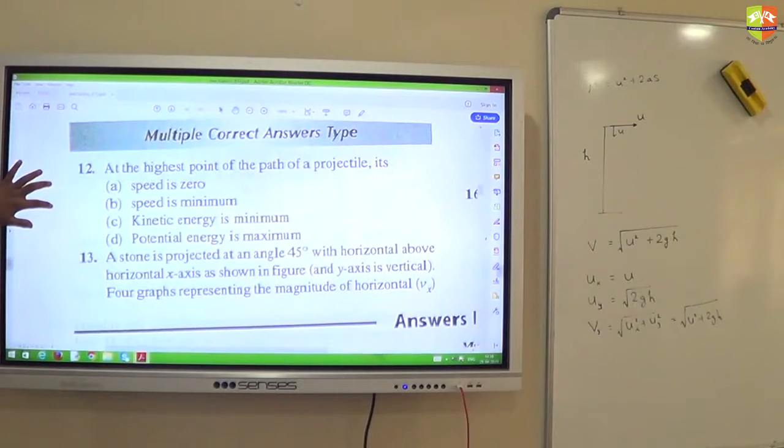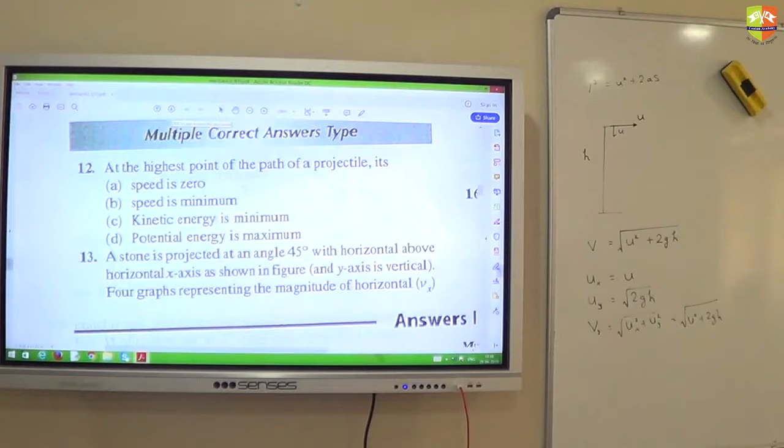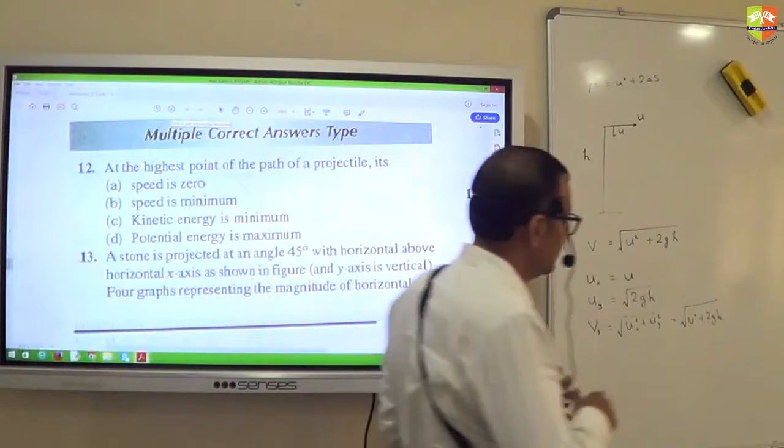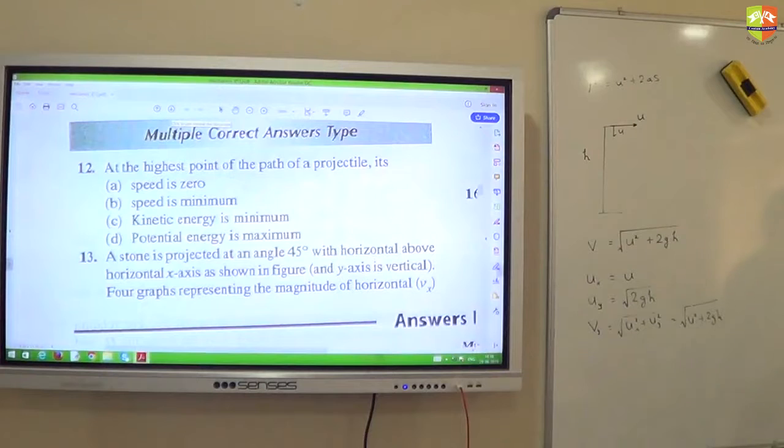Now multiple correct options. More than one will be correct. 12th. What is the answer for 12th? Okay. How do you say speed is 0? All of you know.